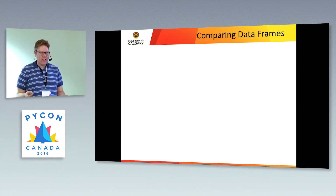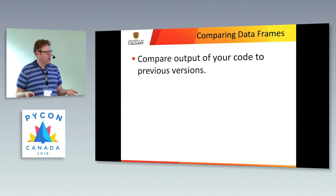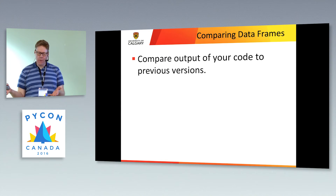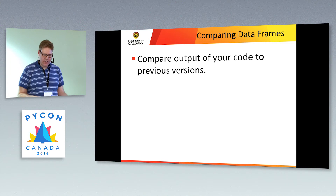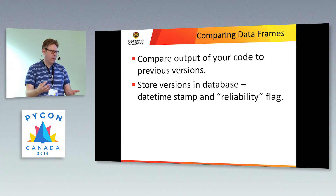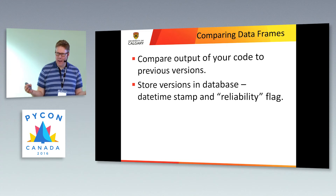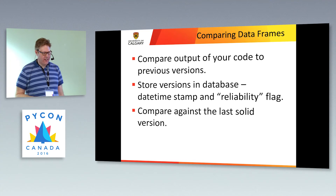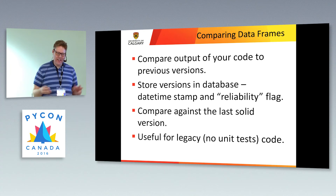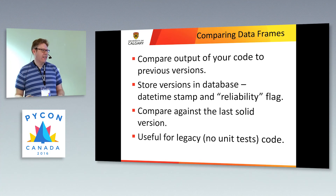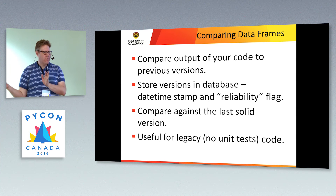Beyond descriptive statistics, you might want to compare data frames together — for example, compare the current output of your code to a previous version. I like to store outputs in a database stamped with a timestamp or software version, and tag them as solid or development-level data, then compare against the last solid version. This is really useful if you have legacy code with no unit tests — you're confident the process works but afraid of introducing errors. You can compare the two data frames to see if the changes that come up are expected.